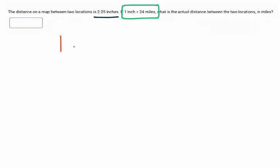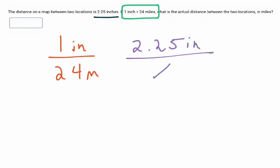So we're going to say one inch - I'm going to write it like a fraction - one inch is 24 miles. So if the distance between two places is 2.25 inches, how many miles is that?